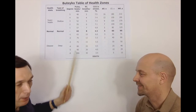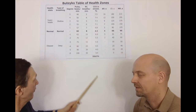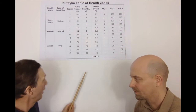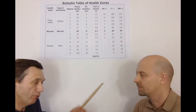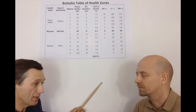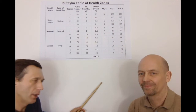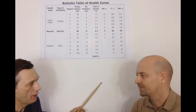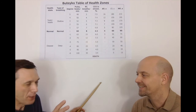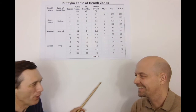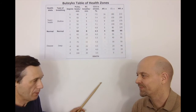Buteyko discovered that there are also several zones of super health — probably starting with himself, because when he started, he had about 10 seconds CP. He was sick with severe hypertension, having blood pressure around 200 without medication, with a predicted life expectancy of about two to three years, just before graduating from the First Moscow Medical Institute. He was an honor student specializing in asthma and heart disease. Then he realized that by slowing down his breathing, he was able to reduce his own angina pain immediately — literally in 30 seconds to two minutes, depending on how you practice.